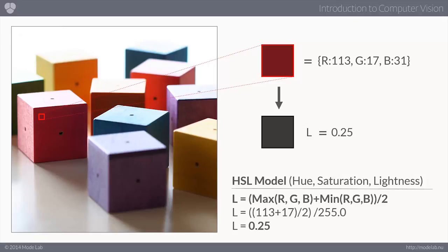Add 17, that's our minimum, and then divide by 2 to find the average. And then to normalize it, to get it between 0 and 1, we're going to divide by 255.